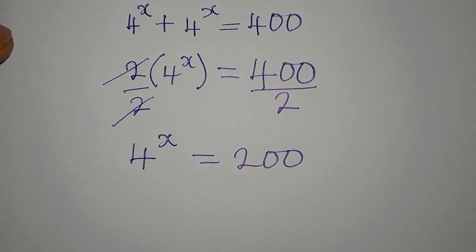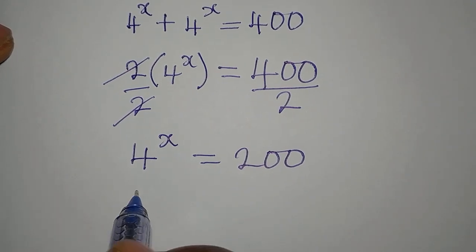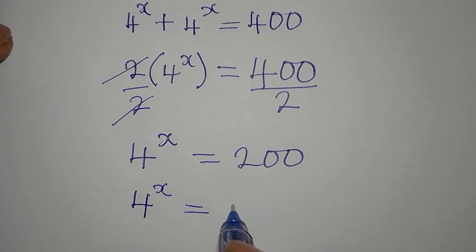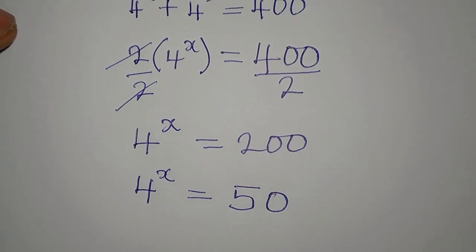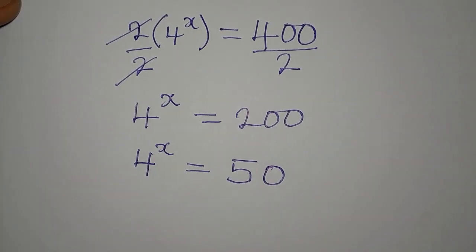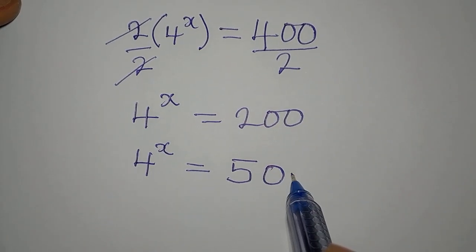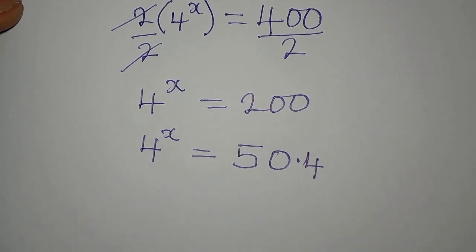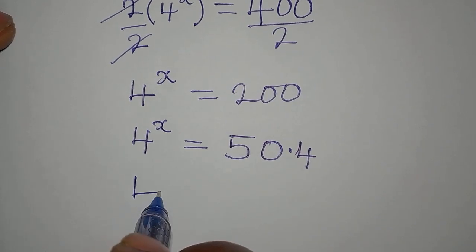Now, notice that 4 is a factor of 200. Let's break it down: 4 into 200 — 4 times 50 is 200. So 4 is a factor of 200, which means we can write 200 as 4 multiplied by 50. However, the left-hand side and the right-hand side cannot be kept in the same base directly.